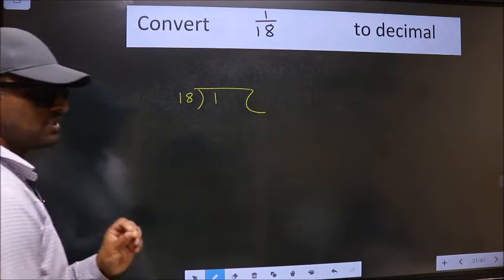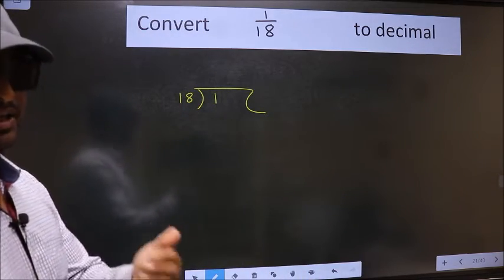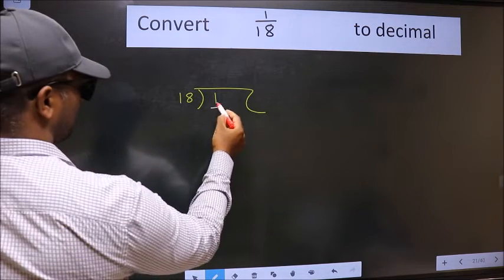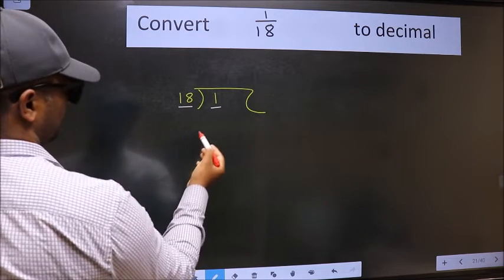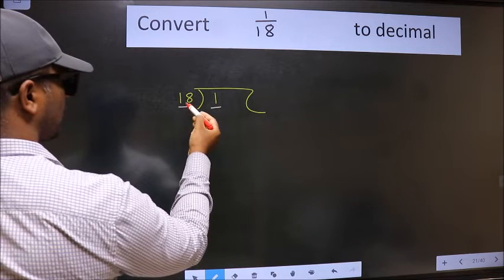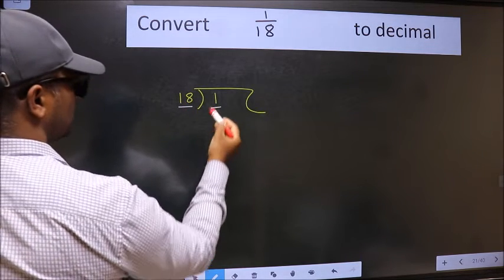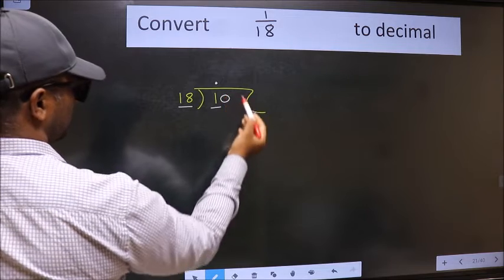This is your step 1. Next, here we have 1 and here 18. 1 is smaller than 18. So, what we should do is we should put dot and take 0.